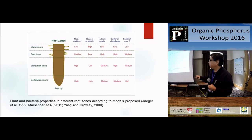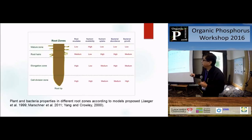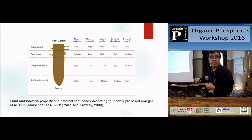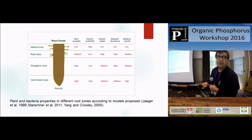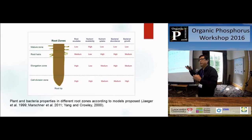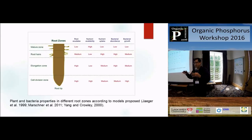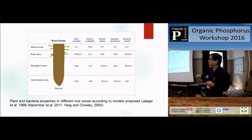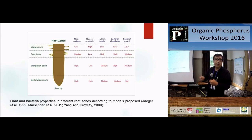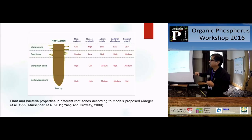This is a model taken from different papers. We can find in the root different compartments corresponding to different areas or different growth stages. This affects root exudate, nutrient availability, nutrient uptake, bacteria abundance, and bacteria community. The literature says the rhizosphere is a heterogeneous system. We have different dynamics in each compartment and different bacteria, different communities, or different functionality - it's very complex. We use the mature zone, the older area on the root, and the root tip, the new area - they are more contrasting areas.